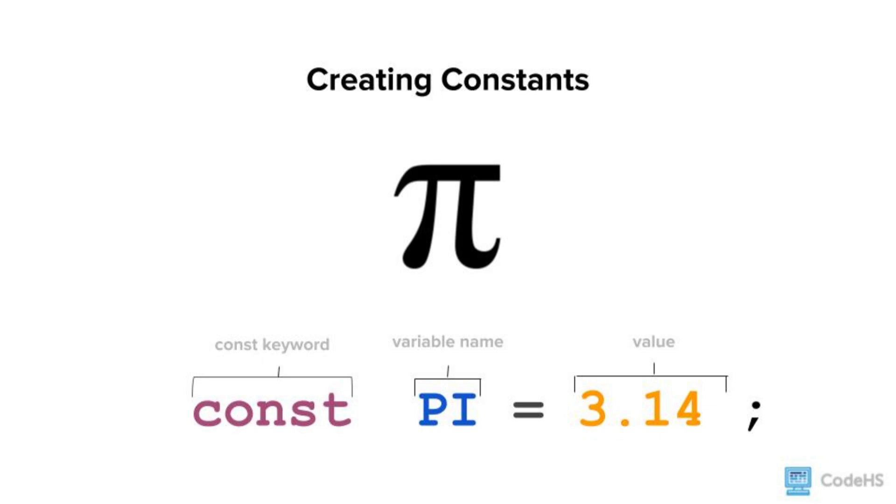To declare a const variable, use the const keyword followed by the variable name. It is convention to write the variable name of a constant in all uppercase letters. In JavaScript, const variables must be assigned a value when they are declared.